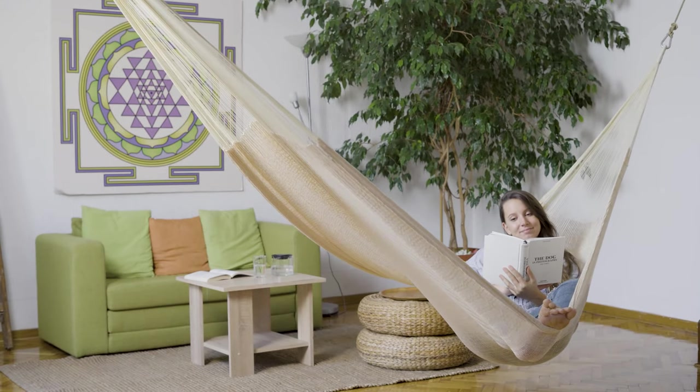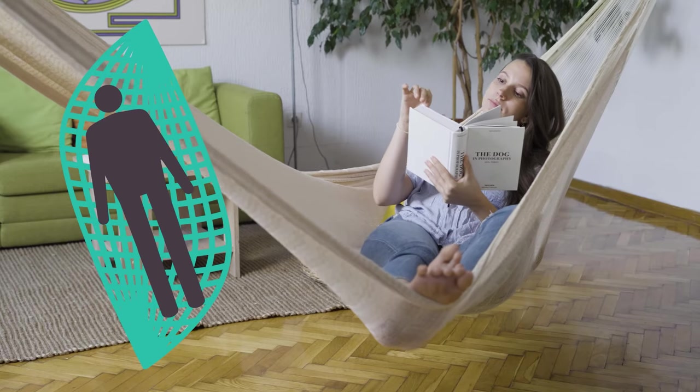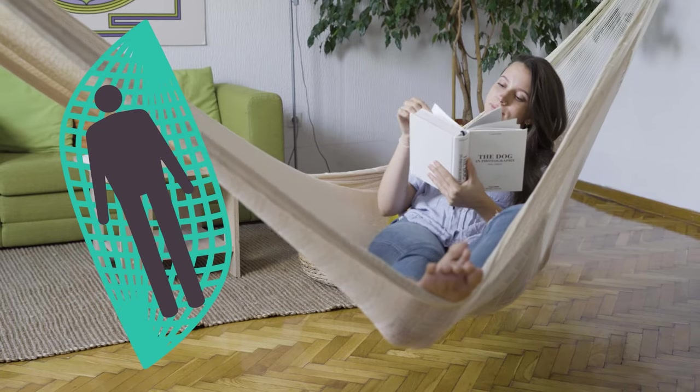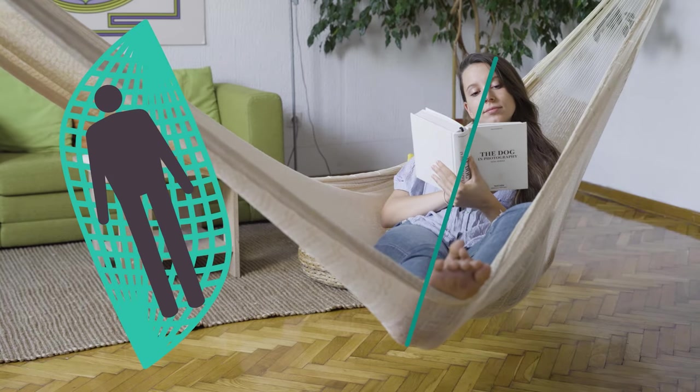The sagging of the hammock also affects what is the best lying position. Here, the hammock hangs like a banana at an angle of about 30 degrees. In this case, it is best to lie diagonally, like this woman.